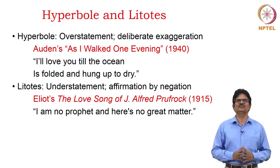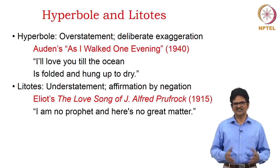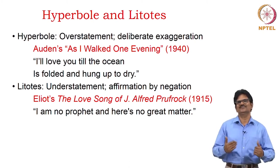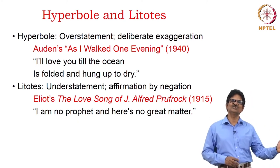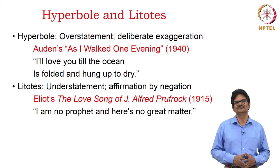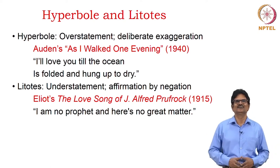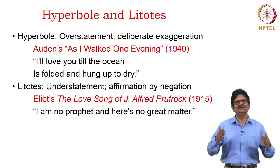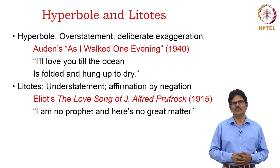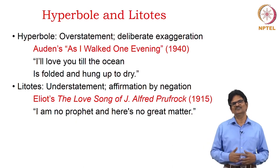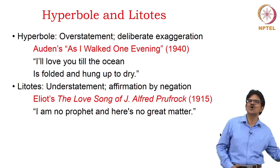Hyperbole and litotes is a pair of figures of thought. Hyperbole refers to overstatement or deliberate exaggeration. For example, Auden's poem 'As I Walked One Evening' has these lines: 'I love you till the ocean is folded and hung up to dry.' Can we imagine an ocean drying up? The poet imagines this through exaggeration. Next we have litotes, which means an understatement — just the opposite of hyperbole. It is also a kind of affirmation by negation. In T.S. Eliot's poem 'The Love Song of J. Alfred Prufrock,' we have this famous line: 'I am no prophet and here is no great matter.'